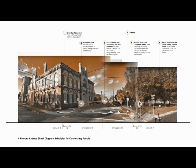This goes hand in hand with the principle of active facades and local identity. The architecture contributes to the attractiveness of the urban design — it is visually interesting, but there's a lack of active doors per block that conflicts with this principle and people's use of the street. If there's no activity in the building, there's no destination for people. But these principles all work in harmony, and due to the positive aspects that North Howard and Main Street already have, there's great potential to work with.